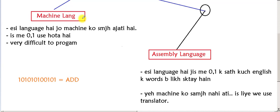Your program will be easier to understand and your instructions will be executed. Assembly language needs a translator — we call it an assembler. The assembler converts assembly language into machine language.